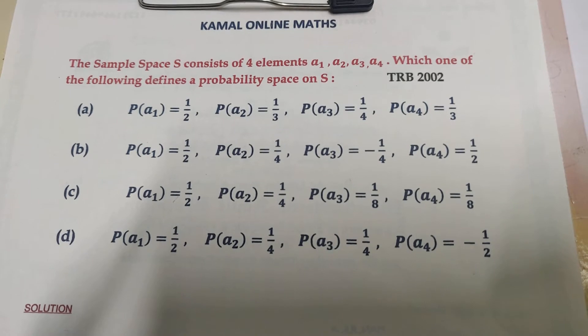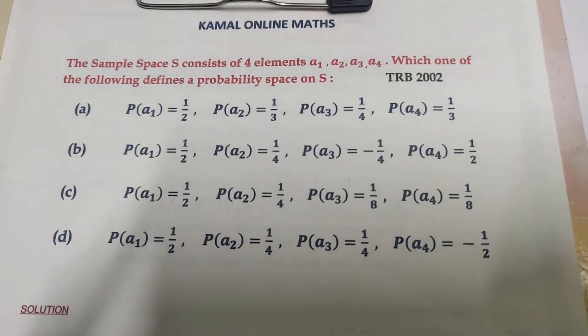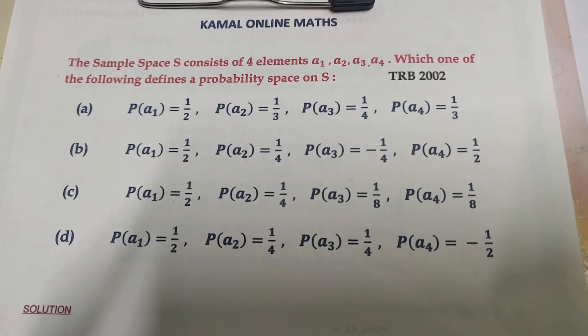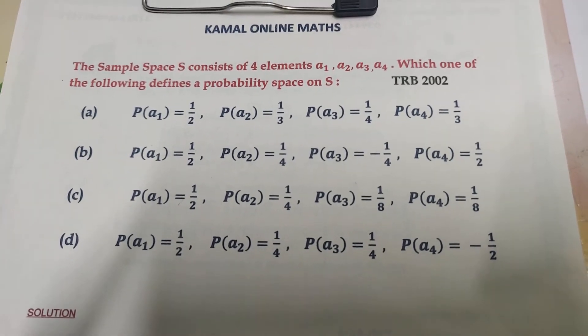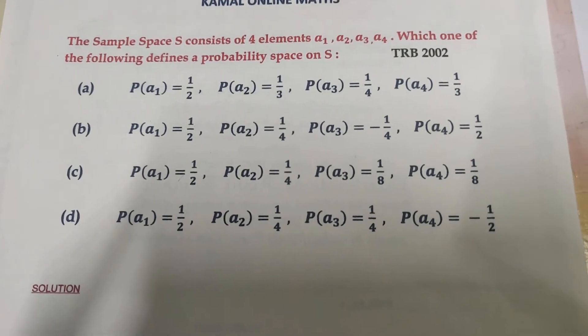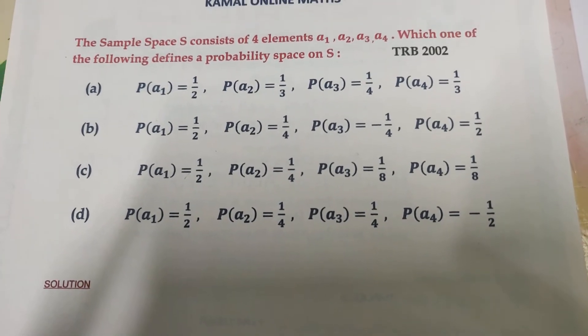So we have sample space S with four elements: a1, a2, a3, a4. We need to find which option defines a probability space.